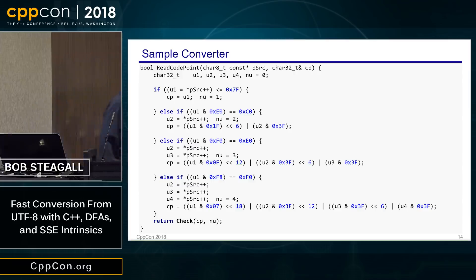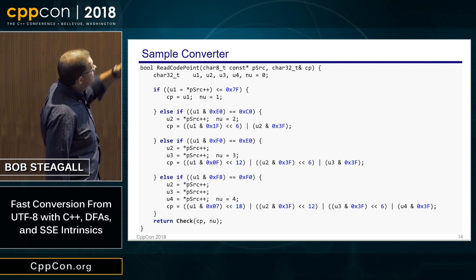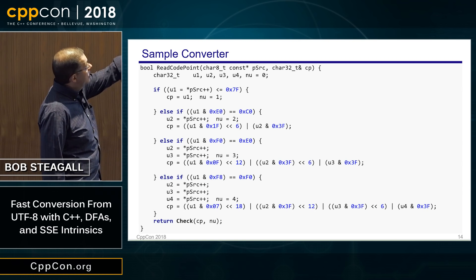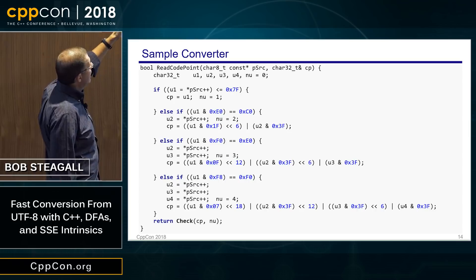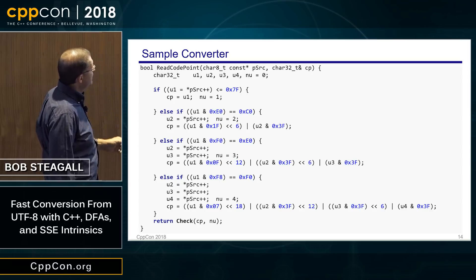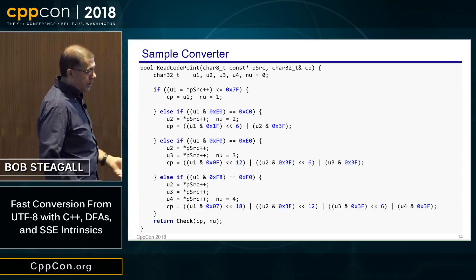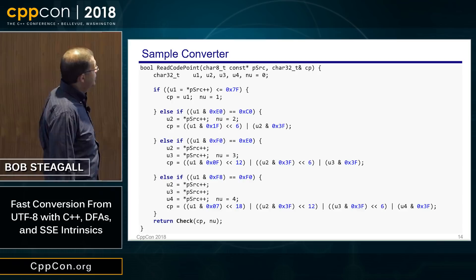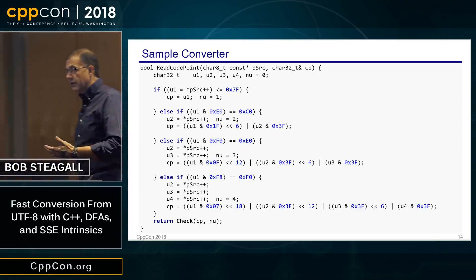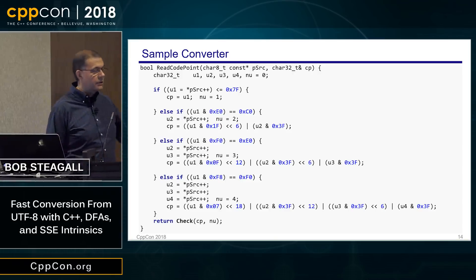Here's a sample converter — the canonical simple way of doing it. At the top of the function I have an input array pointer, and a char32_t as my output code point parameter. I use an if-else ladder looking at the value of the leading byte, doing some masking to find what range it's in, then doing bit manipulations to compose bytes from the input octets into the code point. There's a small function at the end that checks the value is a valid code point.